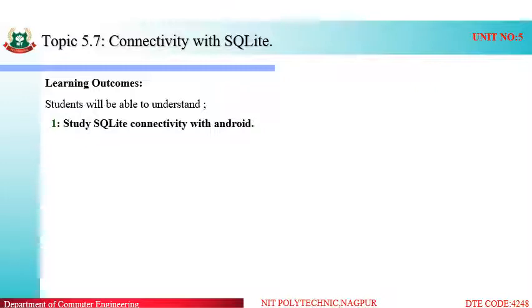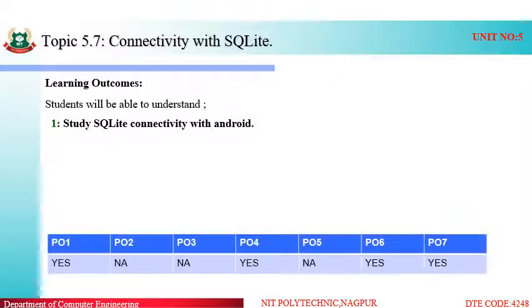We will study how to connect the SQLite database with our Android application and perform different DML operations: insert, update, and delete. The POs mapped for this topic are PO1, PO4, PO6, and PO7.